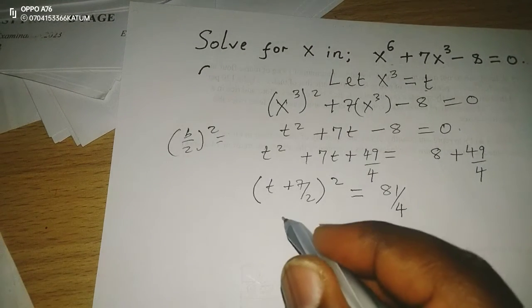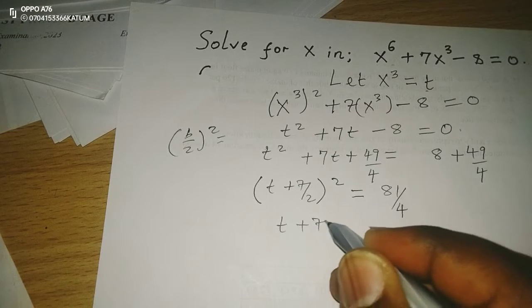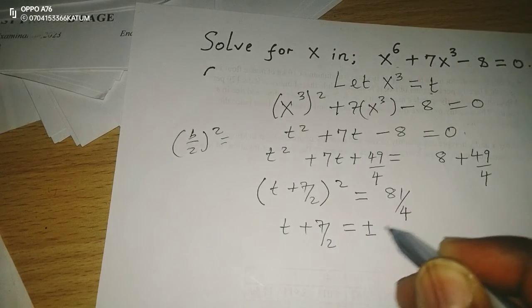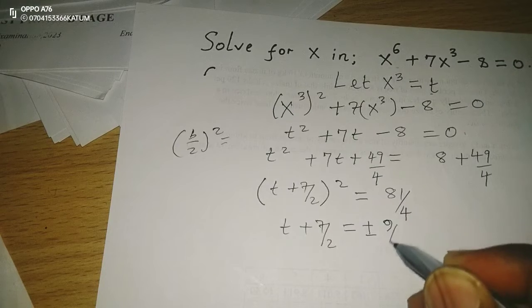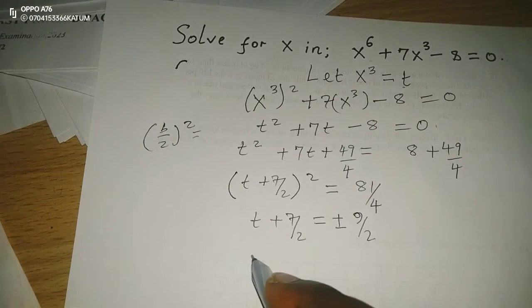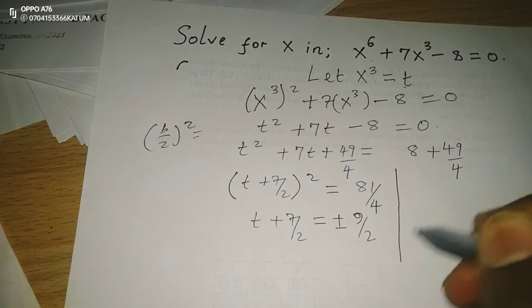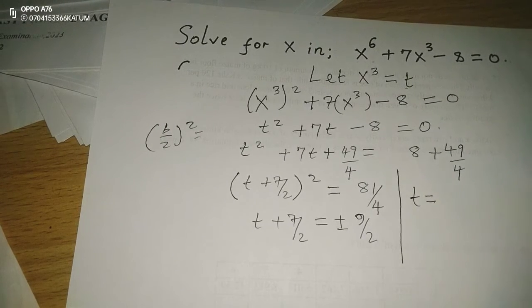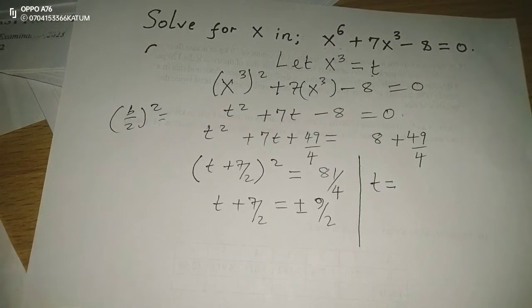Therefore, square root of both sides, t + 7/2 equals to plus or minus 9/2 when we take square root. Therefore, the value of t is either going to be 9/2, then I add or subtract 3.5.